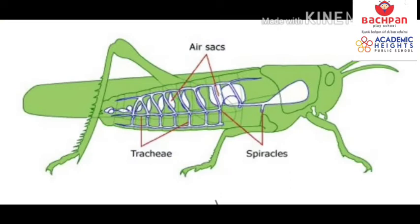Here in the figure you can see there are spiracles, which are connected to the trachea, and it also has air sacs. The spiracles open into a network of thin air tubes called trachea. Insects do not have lungs, and they breathe slowly.